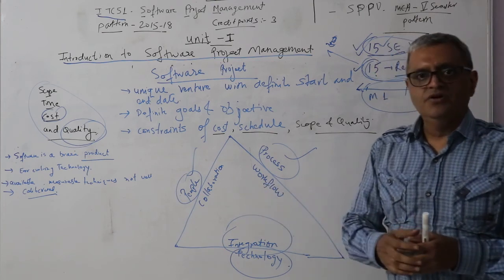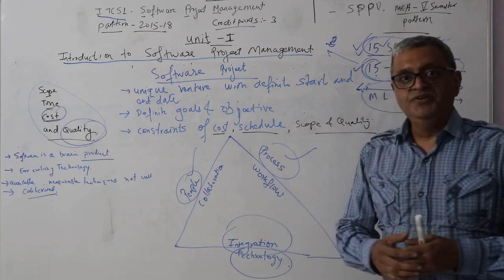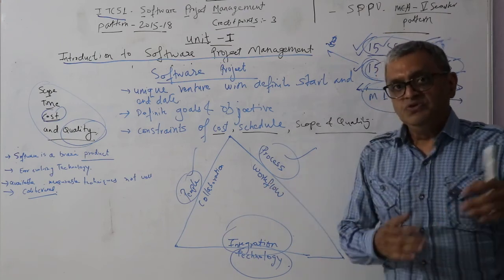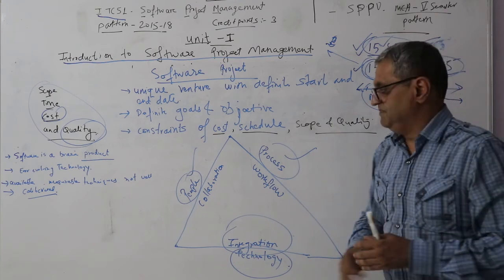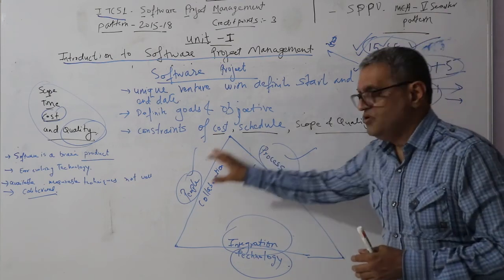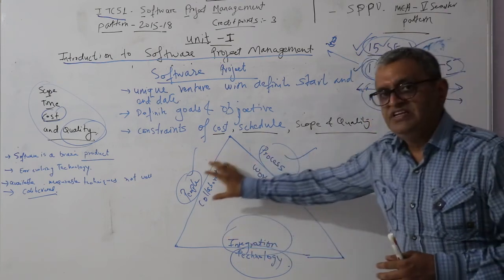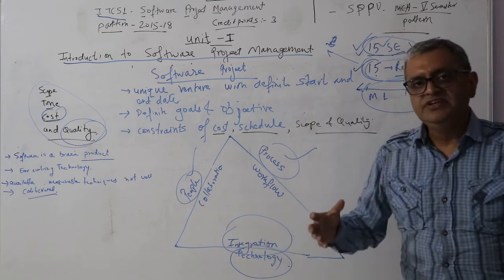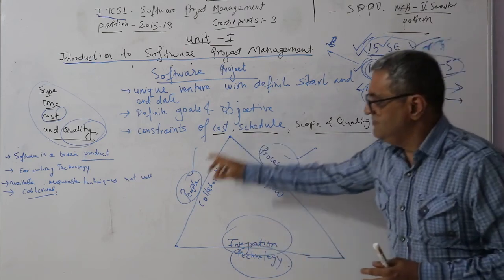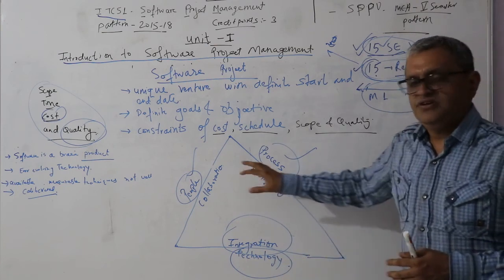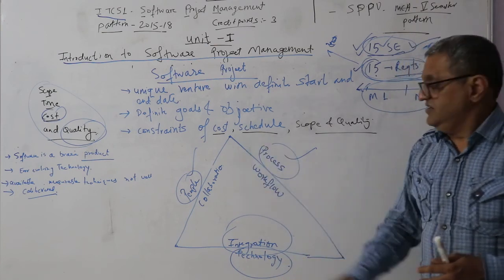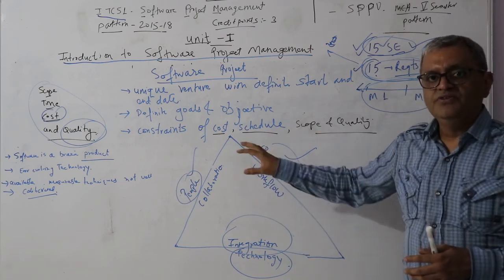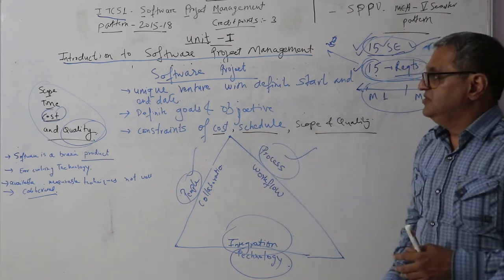And of course you need a process — software engineering processes, software development life cycle. Your life cycle can be a waterfall model, a spiral model, or in today's world, everyone wants to follow the agile model. These three sides — People, Process, and Technology — form the software project management triangle, and they need to work together to deliver successful software.